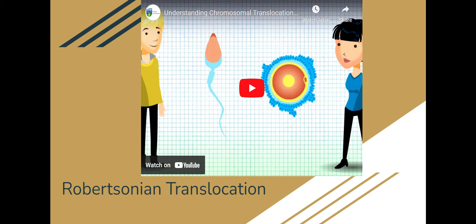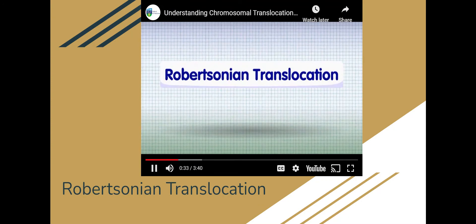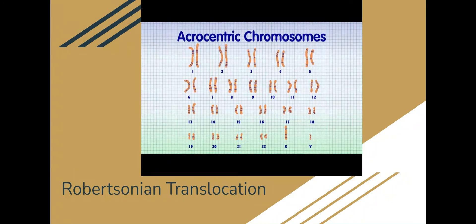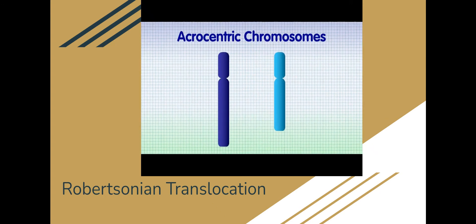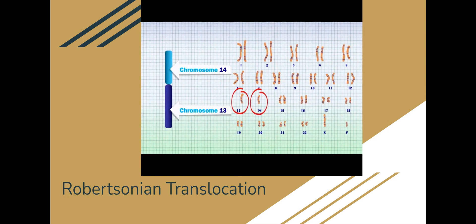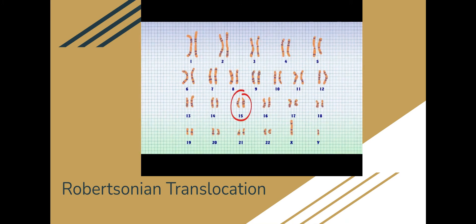Now we're going to talk about Robertsonian translocations. This is when two chromosomes stick together and make one giant chromosome. A Robertsonian translocation carrier has 45 chromosomes instead of 46. Robertsonian translocations only occur between the acrocentric chromosomes — chromosomes 13, 14, 15, 21, and 22. The most common chromosomes to become stuck together are chromosomes 13 and 14, and the next most common are chromosomes 14 and 21.